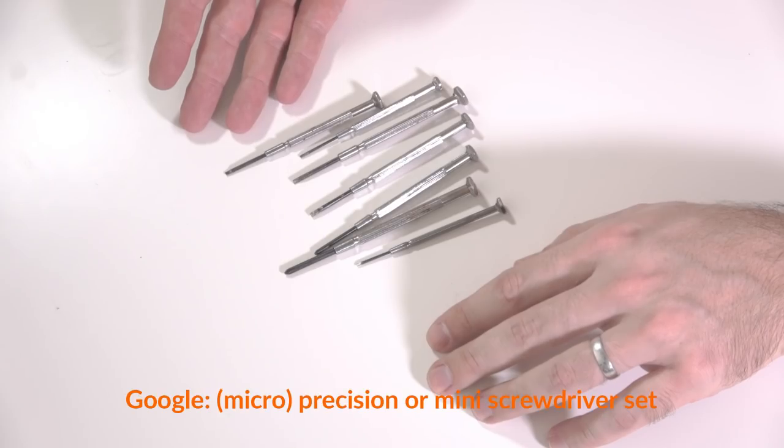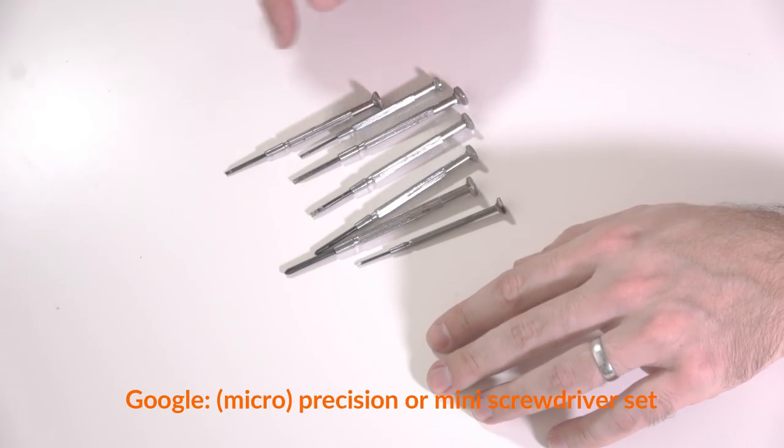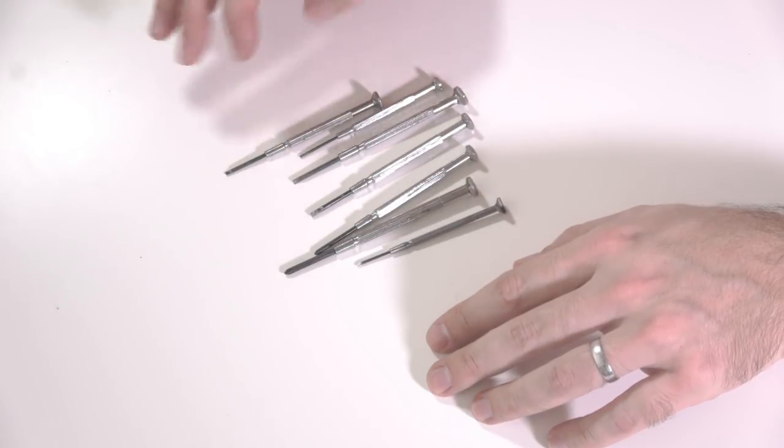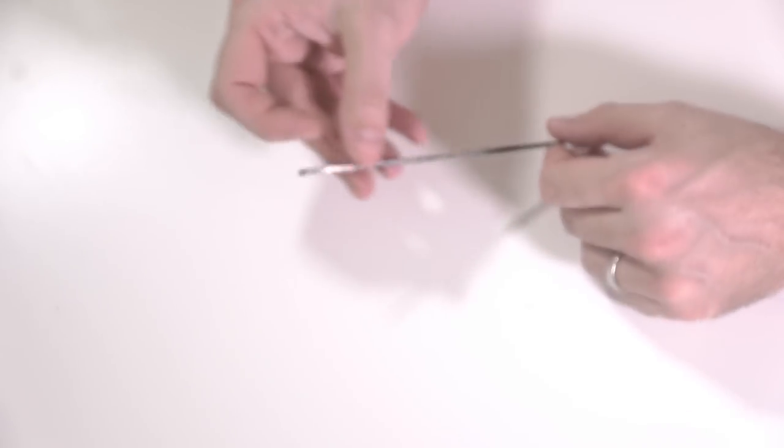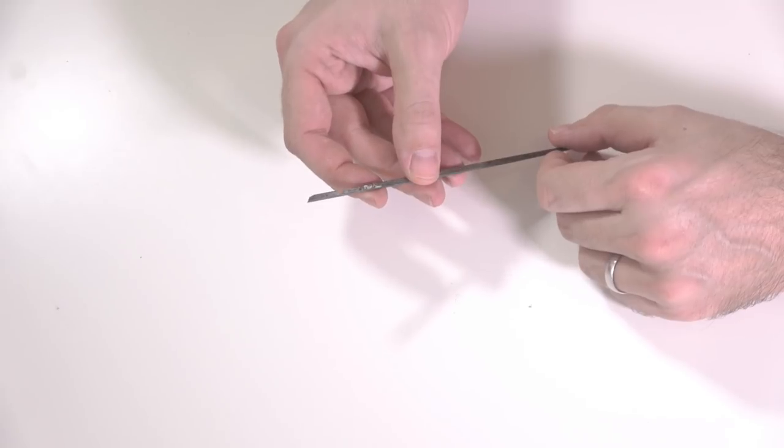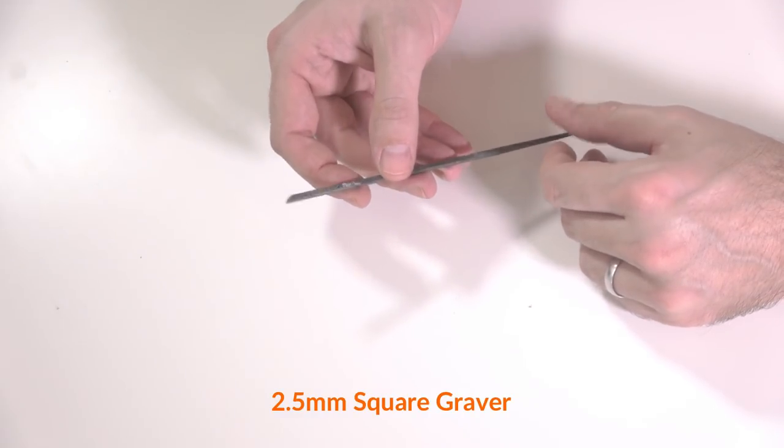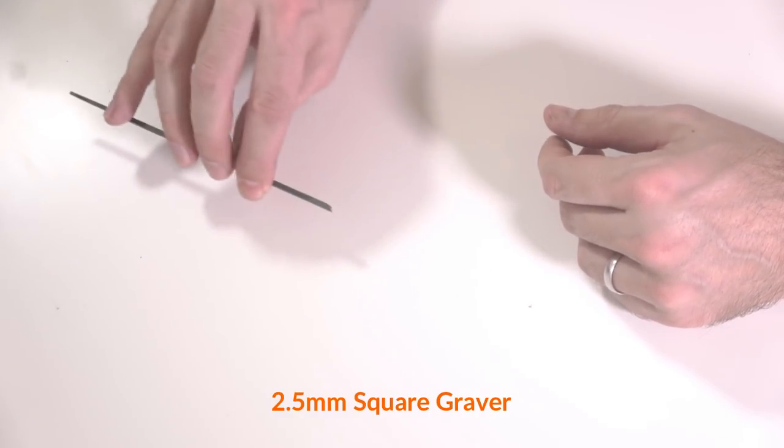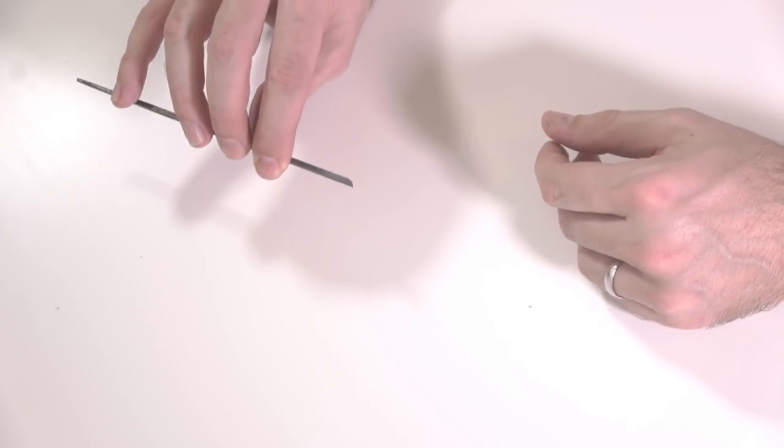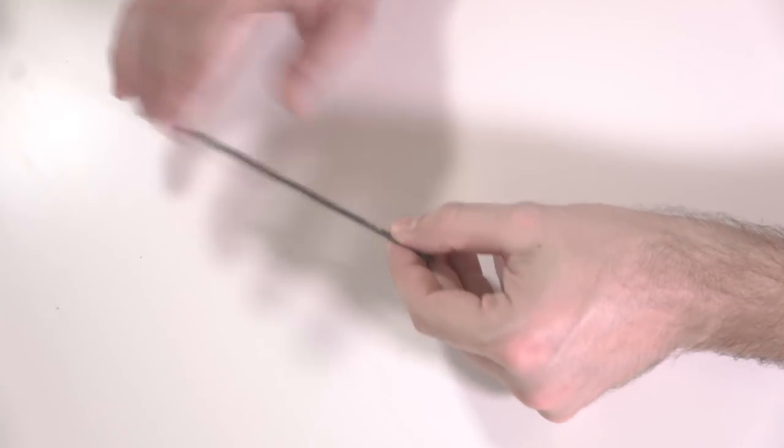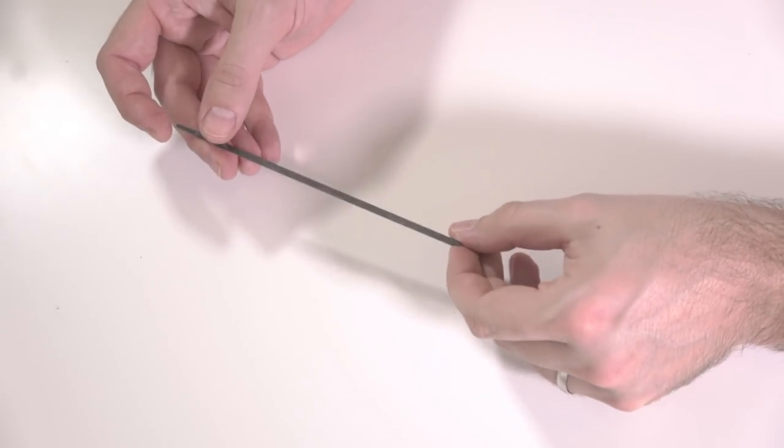A set of miniature screwdrivers, pretty self-explanatory, you want crosshead and flathead. This is an interesting tool I've been asked about before. This is a two and a half mil graver and it's fantastic for removing excess solder from corners of joints to square them up. It's a very useful tool that I use quite often.